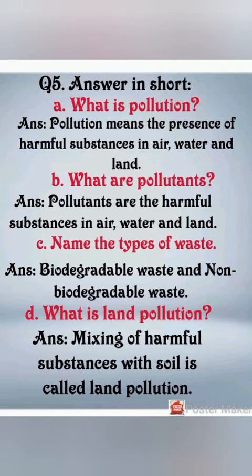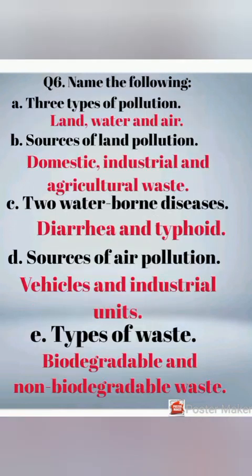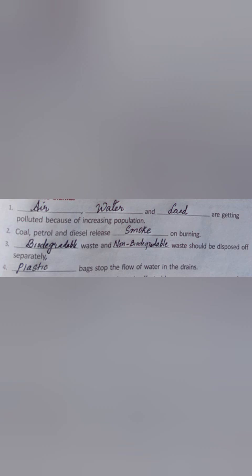Question number six: name the following. Three types of pollution — land, water, and air. Sources of land pollution — domestic, industrial, and agricultural waste. Two waterborne diseases — diarrhea and typhoid. Sources of air pollution — vehicles and industrial units. Types of waste — biodegradable and non-biodegradable. Fill in the blanks: air, water and land are getting polluted because of increasing pollution. Coal, petrol and diesel release smoke when burning. Biodegradable and non-biodegradable waste should be disposed of separately. Plastic bags stop the flow of water in drains.